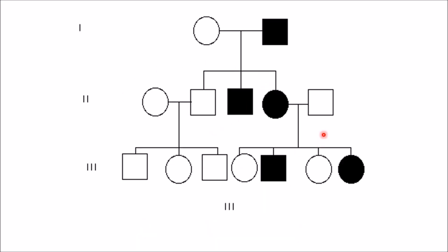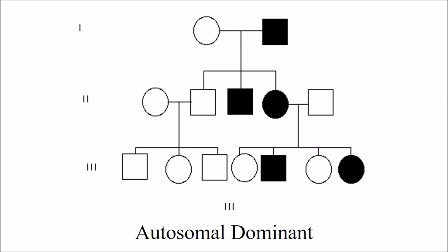In this pedigree chart, all generations are affected and male-to-male transmission is present. Therefore it is an autosomal dominant disorder.